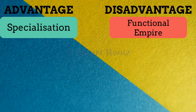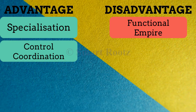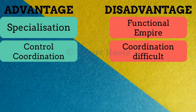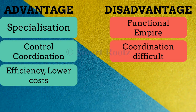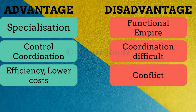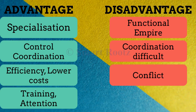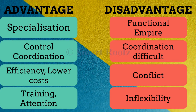However, as each function is specialized, the objectives of functions may have more emphasis than objectives of the organization, so department interest will become more important than organizational interest. As tasks are similar within the department, control and coordination is better in the structure. However, there may be coordination issues when information has to be exchanged between departments. Efficiency also increases due to similar tasks performed repeatedly, resulting in reduced cost. However, there may be a conflict of interest between departments. In this structure, the focus is only on limited skills, hence training becomes easier and attention can be given to different functions. However, this structure may lead to inflexibility as employees are specialized in their jobs and are more independent.